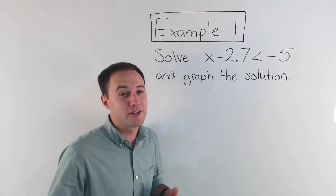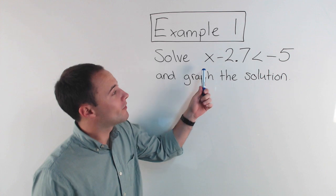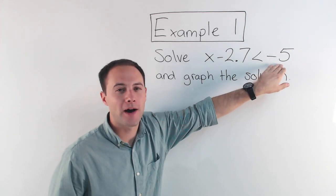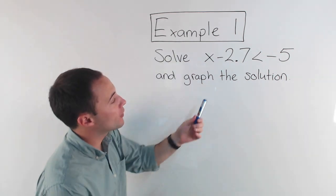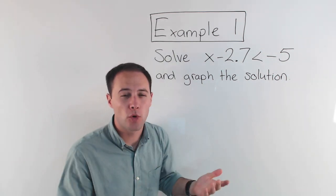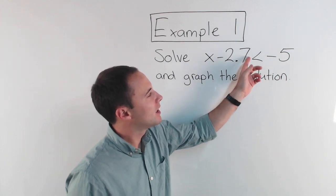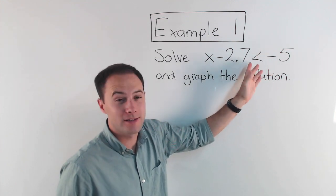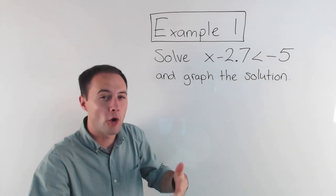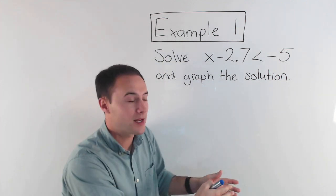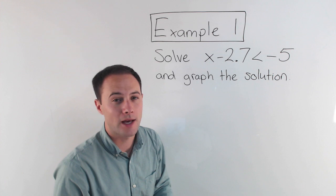Alright, let's get right into our first example. Solve x minus 2.7 is less than negative 5 and graph the solution. So first, when you're solving inequalities, it's just like solving an equation. The only difference is you've got this inequality symbol instead of an equal sign, but you go about it the same way. You try to get the variable alone on one side and then whatever value on the other side.